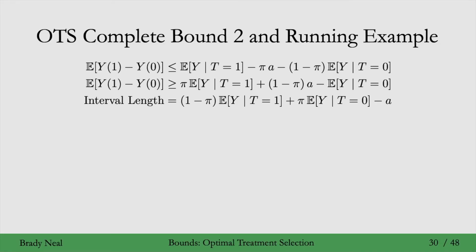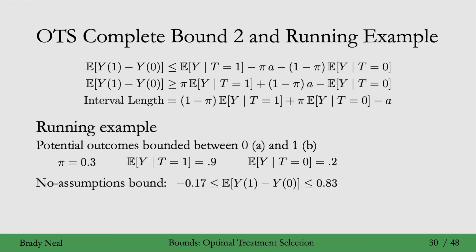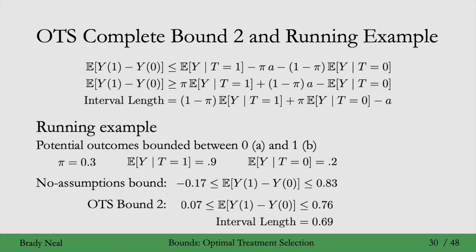Here is the OTS upper bound 2 and the corresponding lower bound for you to prove, along with the interval length from subtracting lower from upper. Plugging our running example into this bound: recalling the no assumptions bound gives ATE between minus 0.17 and 0.83, making the OTS assumption gives ATE between 0.07 and 0.76. We've actually identified the sign of the effect — under the OTS assumption, the ATE is positive.